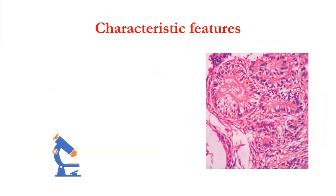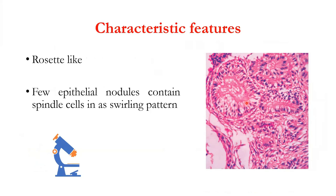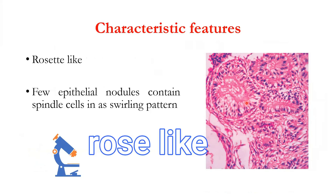The most important and characteristic feature is the rosette-like pattern. Spindle cells of the tumor are arranged like rose petals — overlapping one another in a swirling pattern. The rosette-like pattern is the most characteristic histopathological feature of adenomatoid odontogenic tumor.